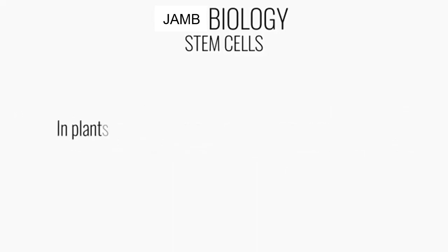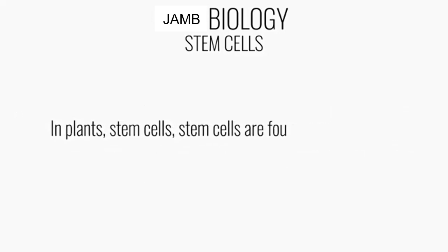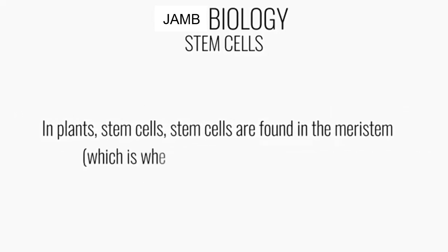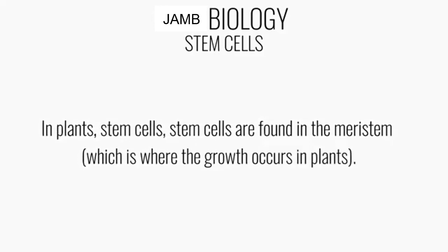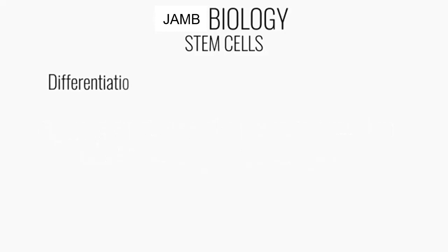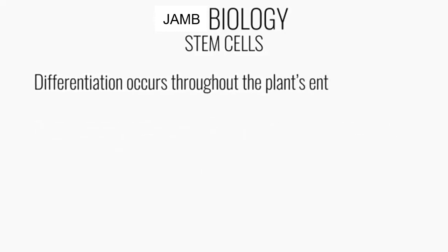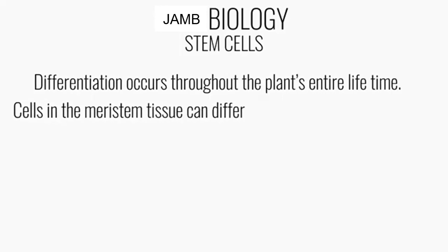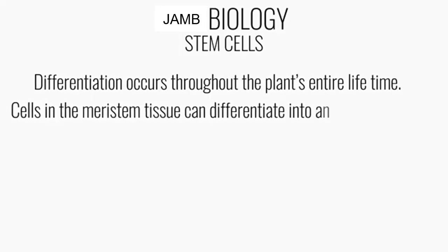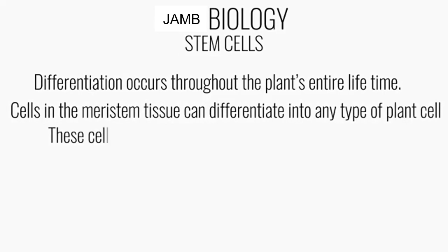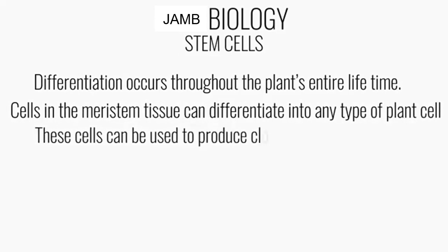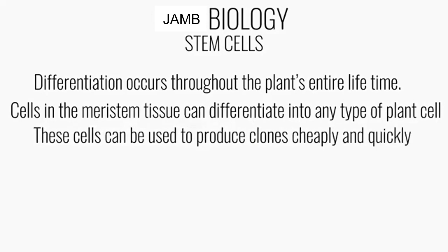In plants, stem cells are found in the meristem, which is where growth occurs. As mentioned in our previous class, differentiation occurs throughout the plant's entire lifetime. Cells in the meristem tissue can differentiate into any type of plant cell.